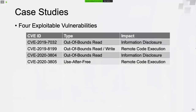Now it's time to talk about the vulnerabilities. I will discuss four exploitable vulnerabilities. The first is an out-of-bounds read vulnerability which could lead to information disclosure. The second is an out-of-bounds read and write vulnerability which could lead to code execution. The third is also an out-of-bounds read vulnerability leading to information disclosure. The last one is a use-after-free vulnerability which could lead to code execution.